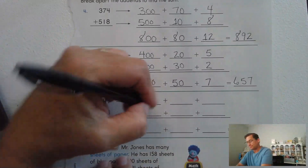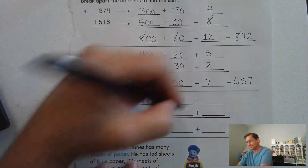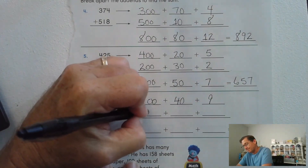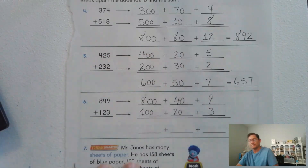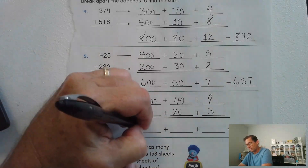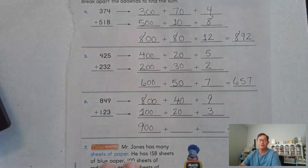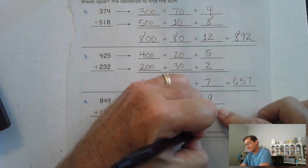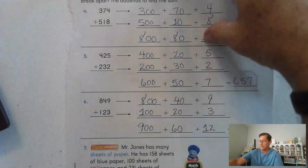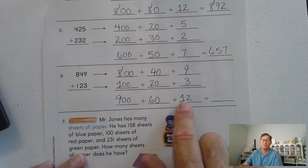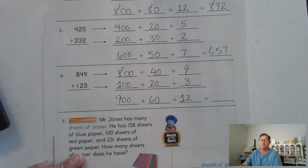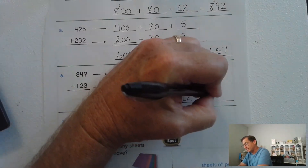Eight hundred forty-nine: eight hundred plus forty plus nine. One hundred twenty-three: eight hundred plus one hundred more is nine hundred. Forty plus twenty is sixty. Nine plus three is twelve. Combine the tens and ones: sixty and ten more is seventy, plus two is seventy-two. Seventy-two plus nine hundred is nine hundred seventy-two.